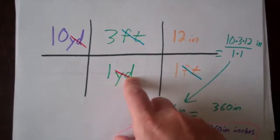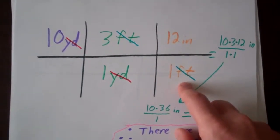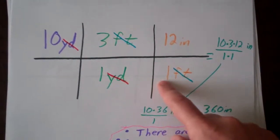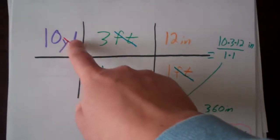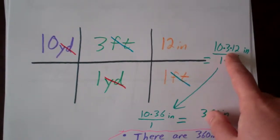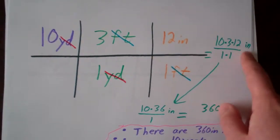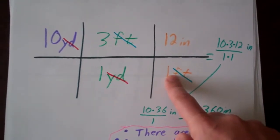Our yards divide out. Our feet divide out. And then we multiply everything in the numerator, divide by everything in the denominator. So after we do this, we have 10 times 3 times 12 inches, because that is the only unit that's left here, divided by 1 times 1.